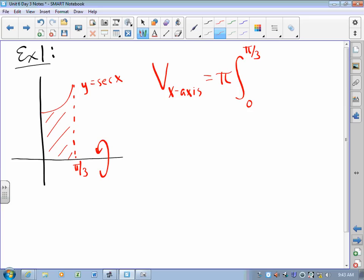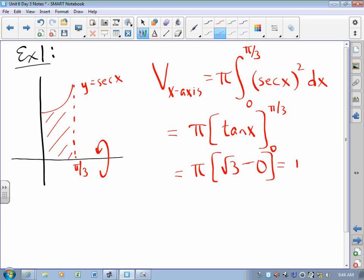Constants can flow back and forth. Variables cannot. Pi is not pi radius squared. The radius of each tuna can is going to depend on the function. And then the heights of the tuna cans are teeny tiny changes in X. I know a function whose derivative is secant squared X. That function is tan X. So I just have to evaluate tan X at pi over three and zero and subtract. I know that the tangent of pi over three is radical three. I know that the tangent of zero is zero. And so I get pi radical three. Isn't that beautiful? You can find volumes!